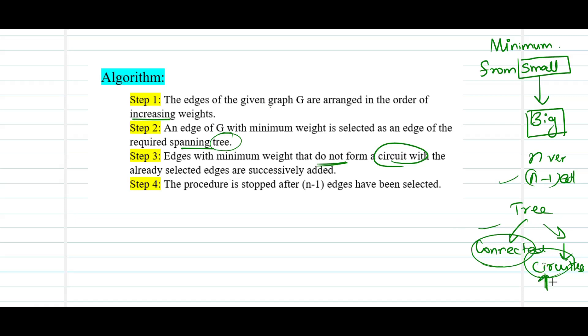The algorithm stops after n minus one edges have been selected. We execute it n minus one times — starting from the first, second, third edge and so on — adding edges successively, making sure we don't form any circuits with already added edges, and stopping after n minus one edges have been added. These are the four steps to execute. For smaller graphs this can be done manually, but for bigger networks, this foolproof algorithm ensures we find the minimum weighted spanning tree.